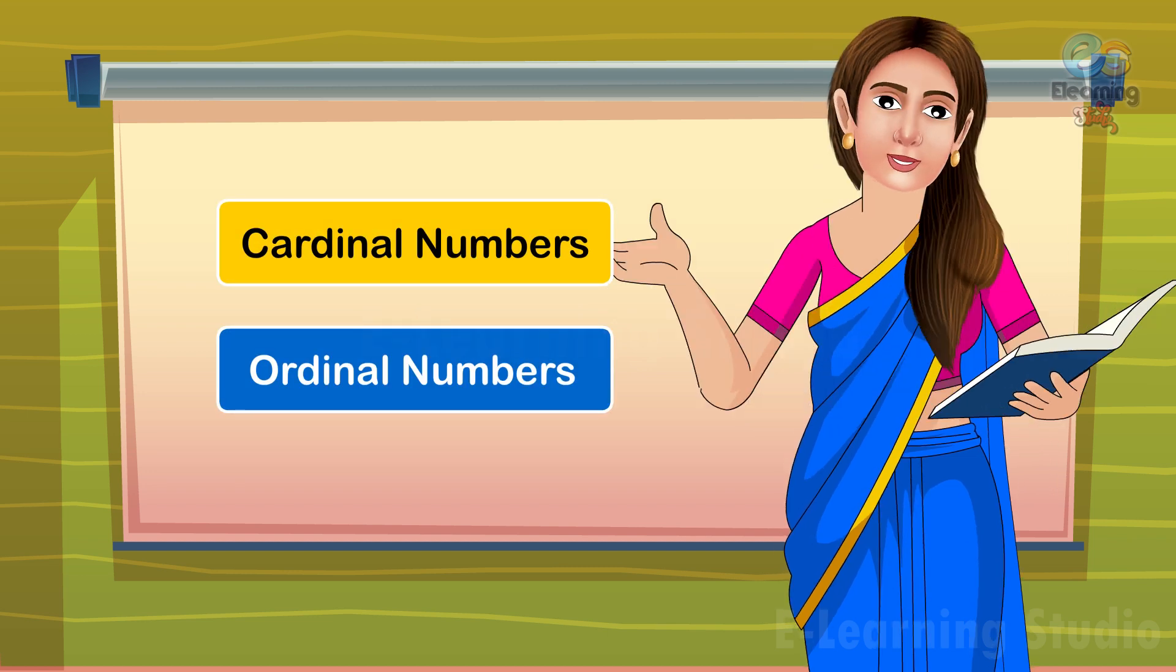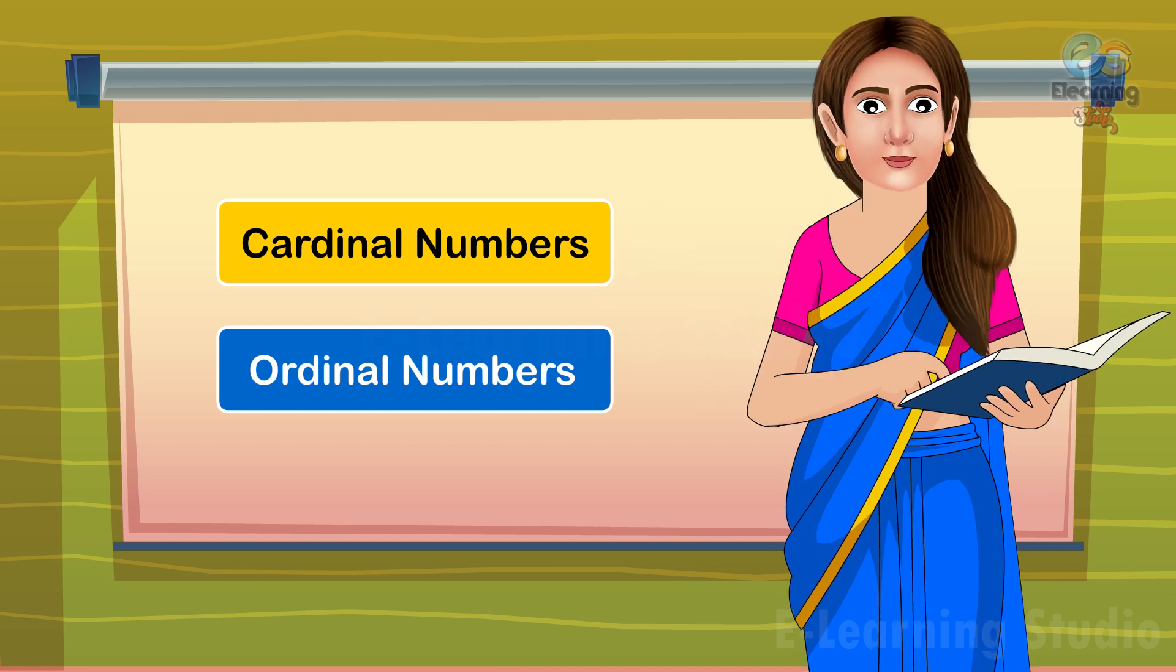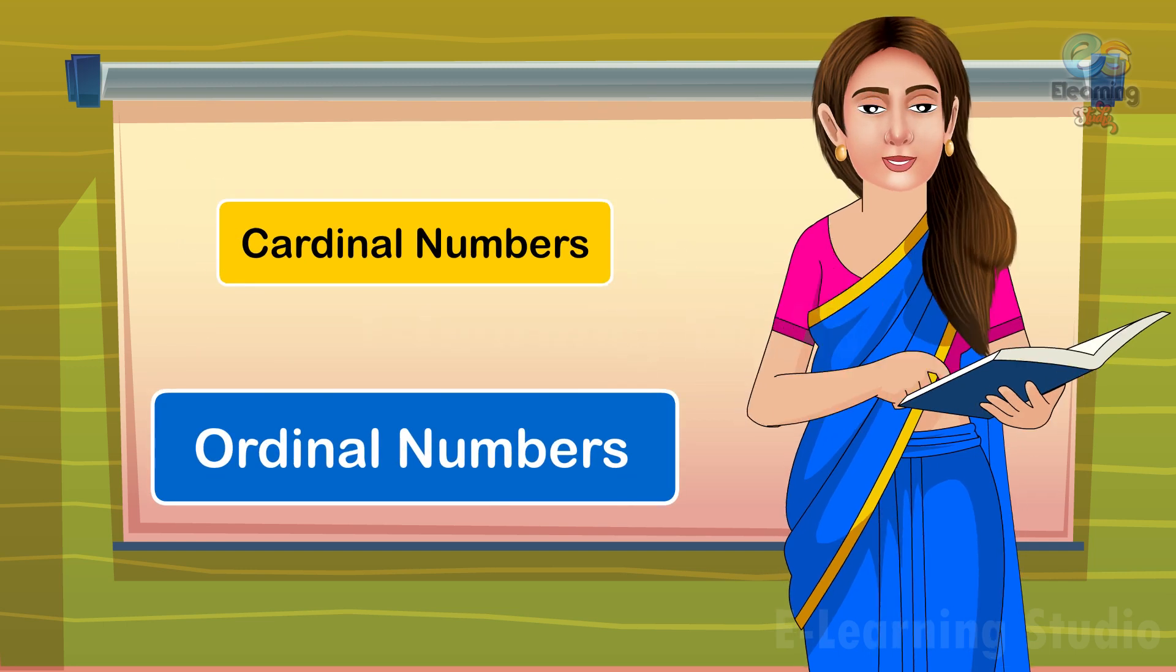Kids, as we know there are two types of numbers, which are Cardinal Numbers and Ordinal Numbers.